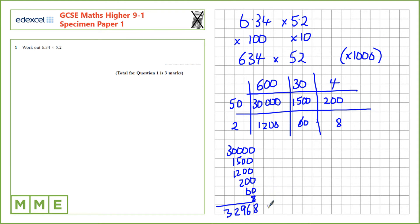We multiplied by 1000 at the start so let's divide by 1000 now. And to divide by 1000 we move the decimal place back 3 places. That's 1, 2, 3. Gives us 32.968.